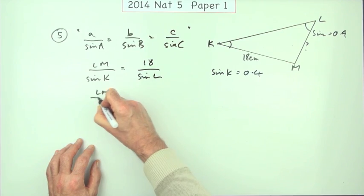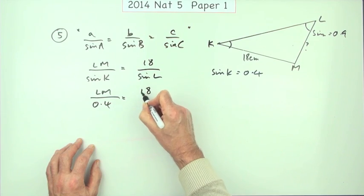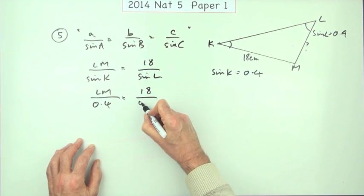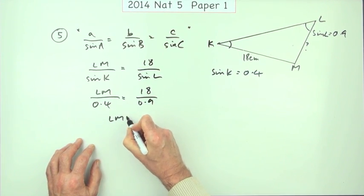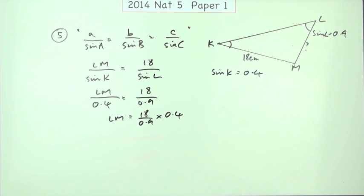So now I could put the figures in. lm over 0.4 is 18 over, and sine of l is, didn't put that in, 0.9. So lm is going to be 18 over 0.9 times 0.4.